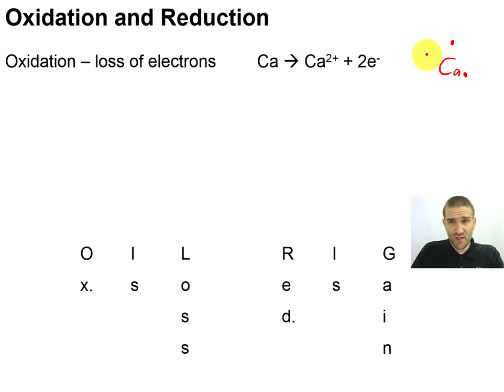When we take away the electrons, when it loses its electrons, we'll end up with Ca²⁺ and two electrons, just like you see in this equation. So this would be an oxidation reaction. Oxidation is loss of electrons.